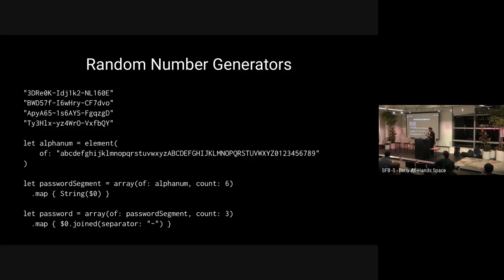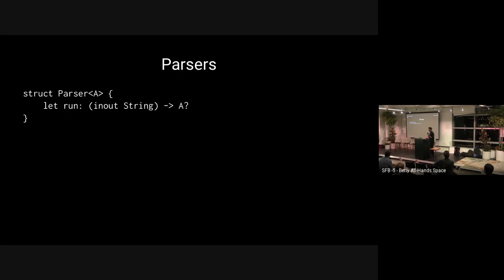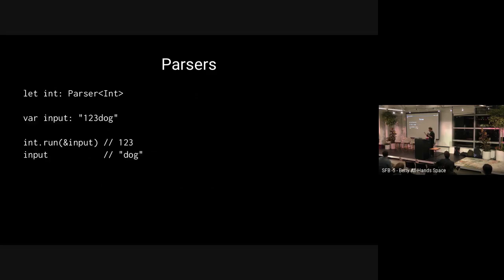Random number generators aren't the only thing that can do this — parsers can too. A parser is the idea of taking some blob of data, in this case a string, and trying to parse some amount off it to possibly return an A, but it's optional because parsing might fail. Say you had an int parser and an input of '123dog' — you'd get back 123, because it successfully consumed '123' from the beginning, and the remaining input would be mutated to 'dog'.